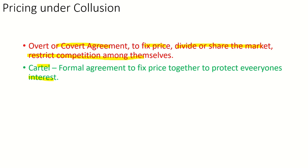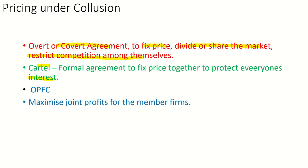A cartel is a kind of collusive oligopoly. When oligopolist firms come to a formal agreement to fix a price together to protect everyone's interest, that is known as a cartel. The members of the cartel care for each other — they fix the price only after considering the interest of all firms in that industry. A real example of a cartel is OPEC — the Organization of Petroleum Exporting Countries — which fixes the price only after discussions between member countries.